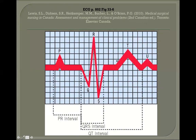Now the ventricles get their own special little wave at the end. This T wave is the point at which the ventricles are repolarizing — that's when they're in diastole, when they're at rest. The ventricles are repolarizing.